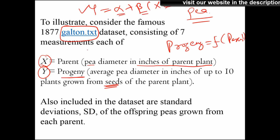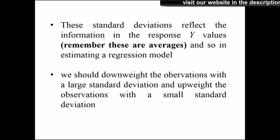We have taken many seeds from each individual parent, so from each parent we have many progeny with different diameters. When you have different diameters you can easily get the standard deviation or variance. In this example the standard deviation of the offspring seeds is given to us, so the estimation process will be slightly easier.